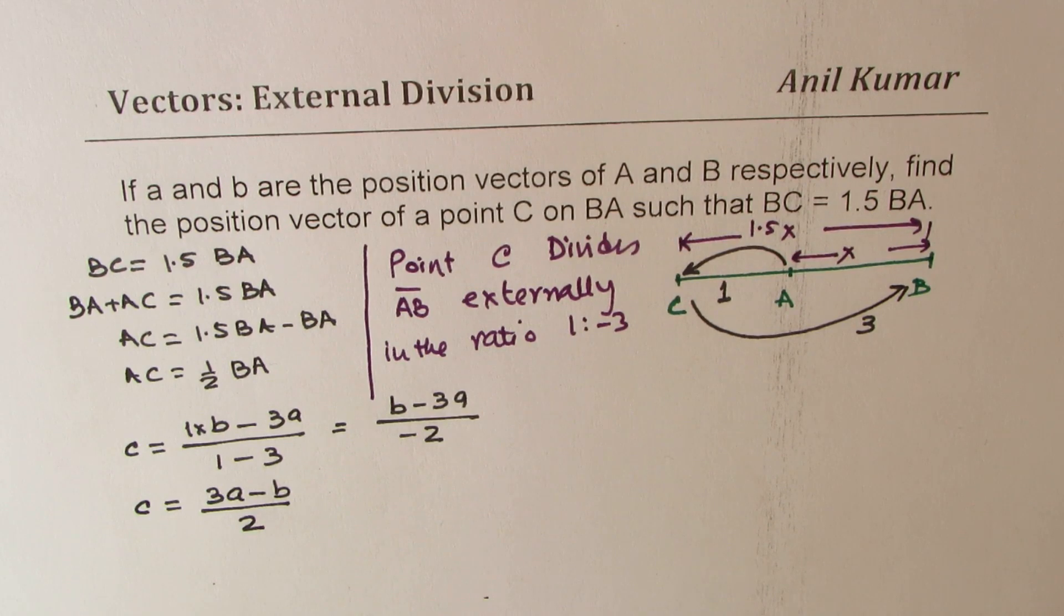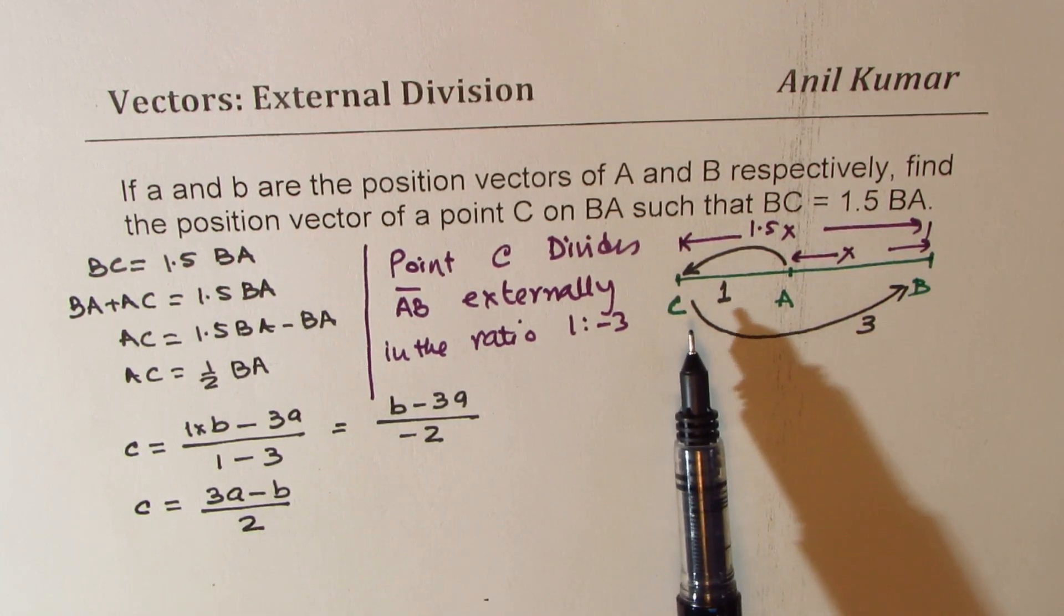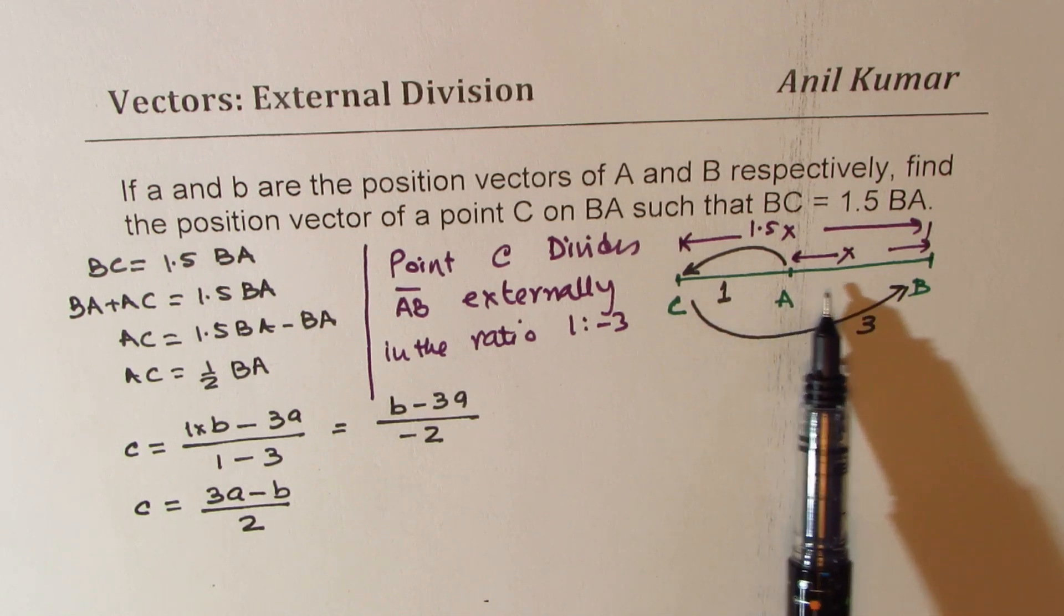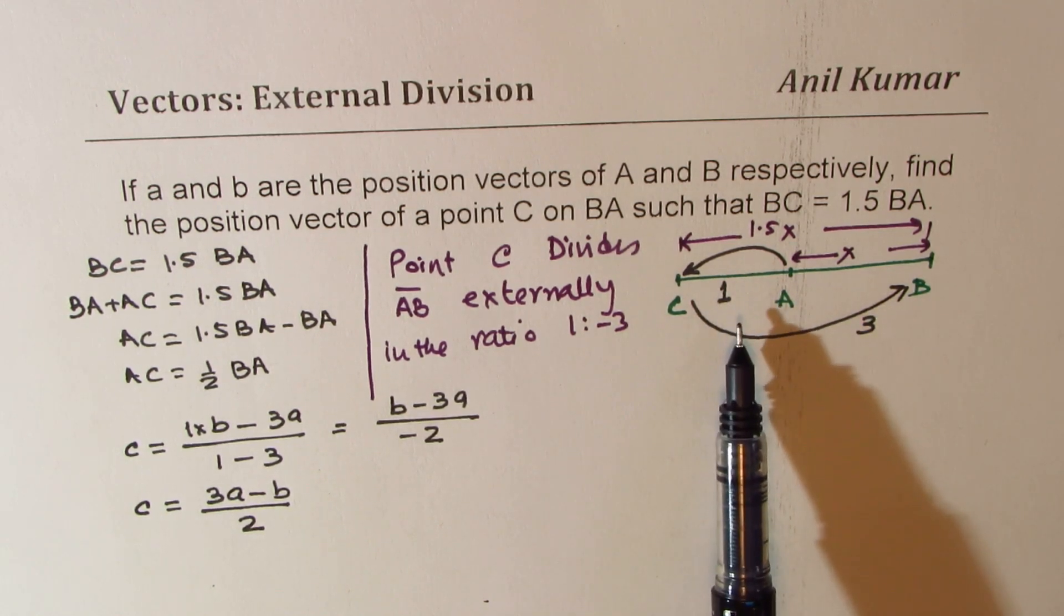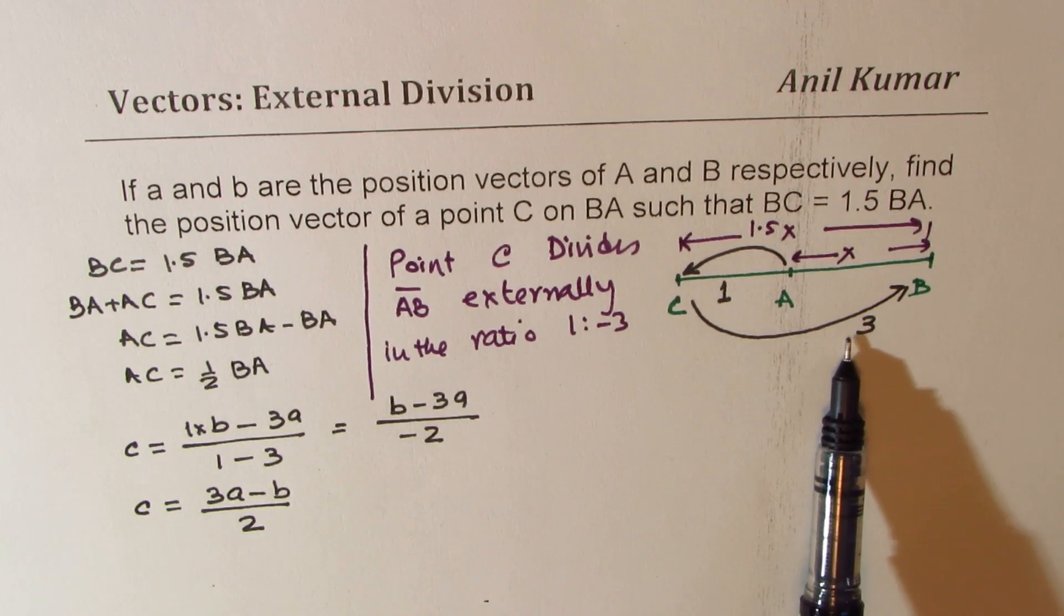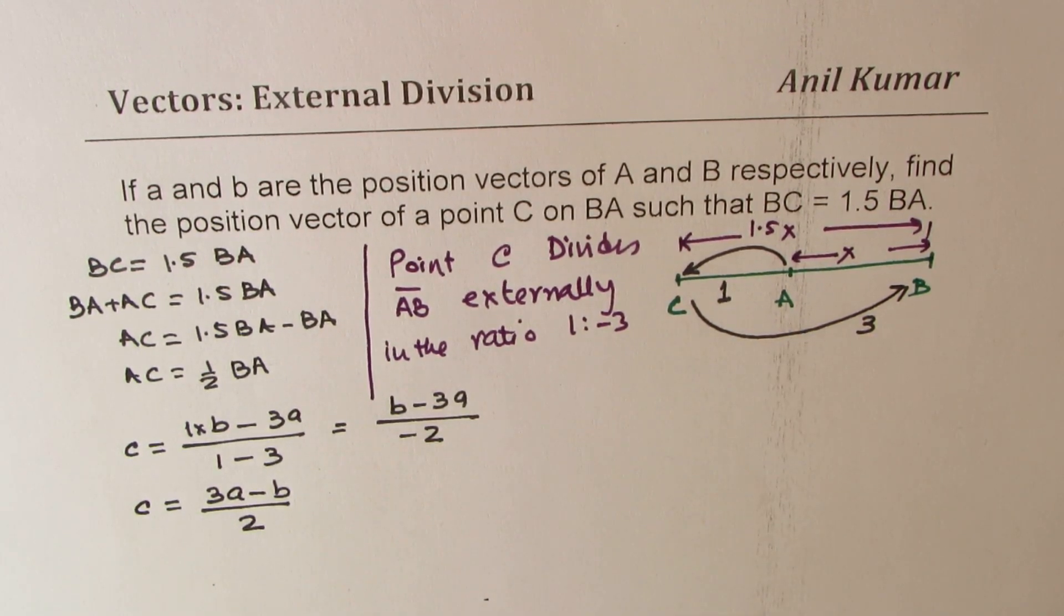So I hope the steps are clear. In this particular case, we first showed that C is dividing AB externally in the ratio of 1 is to 3, and then we used our section formula to find the result that C should be equal to half of 3A minus B.